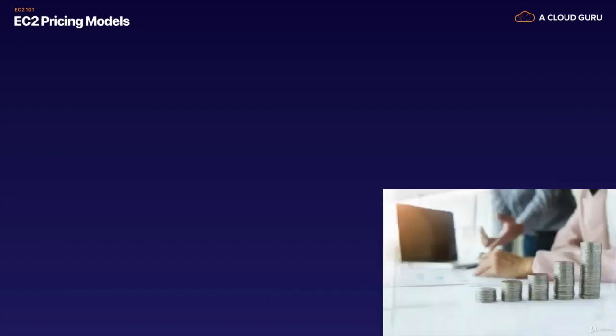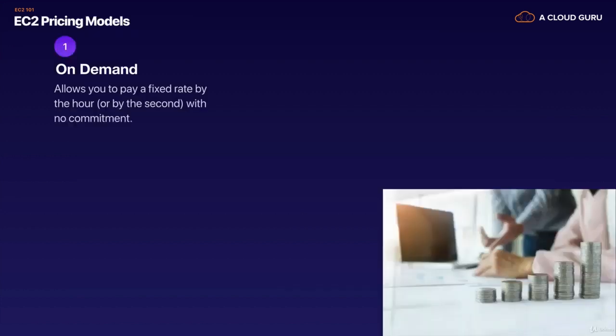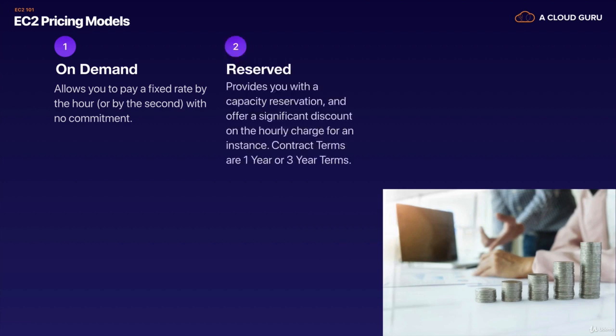EC2 has a number of different pricing models. On-demand allows you to pay a fixed rate by the hour or even by the second with no long-term commitments. You can literally spin it up, have it running for a couple of hours, and then terminate the instance. This is great for developers — you can go in, test an environment, see if it works, and then shut it down. AWS has changed the world by introducing on-demand pricing for virtual machines.